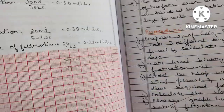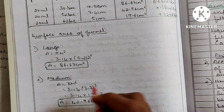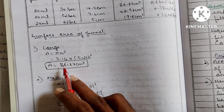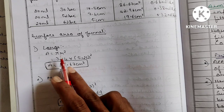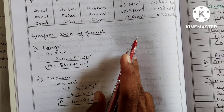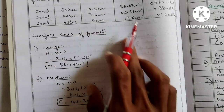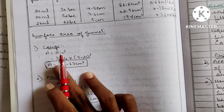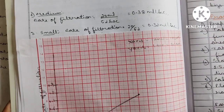To calculate surface area: use the formula π r², where π is the constant 3.14 and r is the radius, which is half of the diameter. For example, if the diameter of your Buchner funnel is 8 cm, the radius is 4, so surface area = 3.14 × 4² = 3.14 × 16 = 50.24 cm².